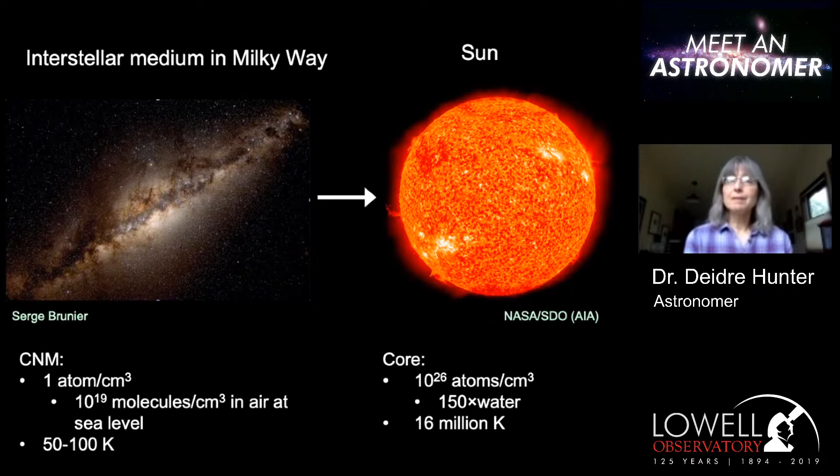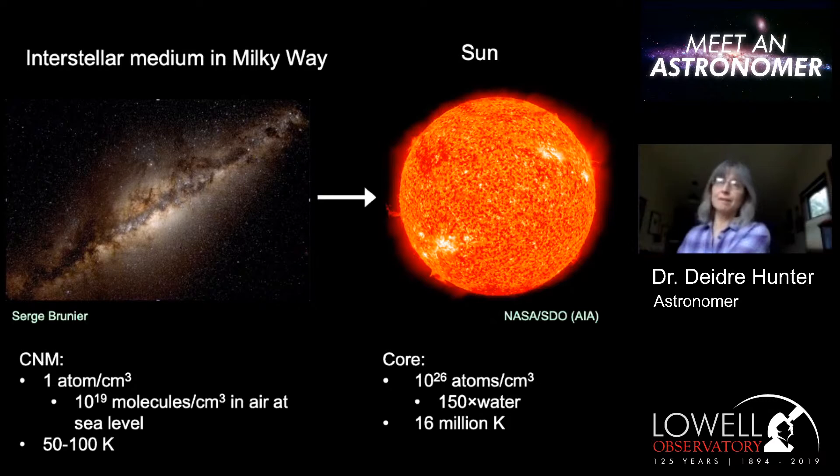The process by which stars form out of that gas results in a star like our Sun, which at the core has a density of 100 million billion billion atoms per cubic centimeter, and a temperature a million times that of the general interstellar medium. So it's an amazing process.